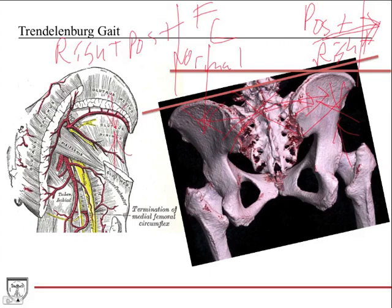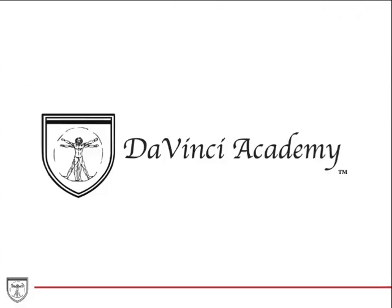These muscles, when they contract, pull the hip outward, so superior gluteal nerve injury also results in very weak abduction of the hip. That closes up our discussion of the gluteal region clinical pearls.